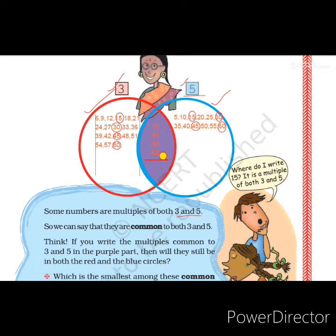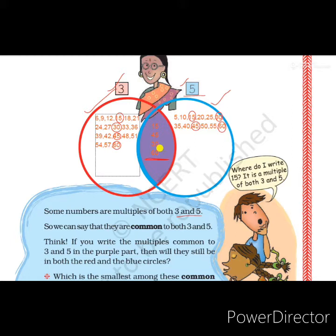So 15, 30, 45, and 60 are common multiples of both 3 and 5. If we consider 15 in the red circle, it is a multiple of 3; if we consider it in the blue circle, it is also a multiple of 5. So these multiples are common to both 3 and 5 — that is why we have written them in the purple color.